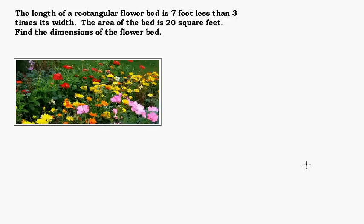The length of a rectangular flower bed is 7 feet less than 3 times its width. The area of the bed is 20 square feet. Find the dimensions of the flower bed.